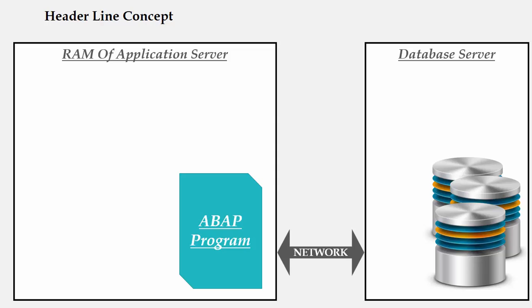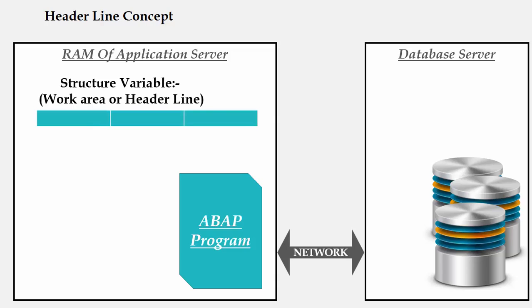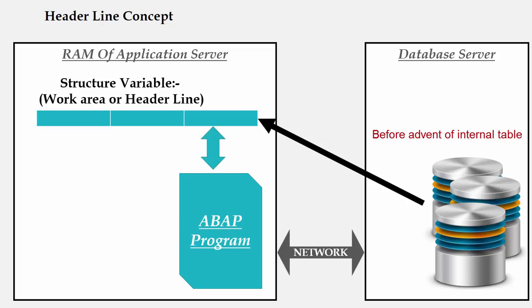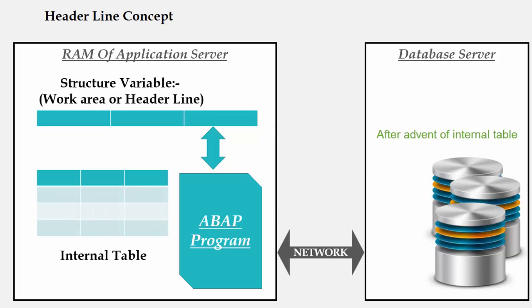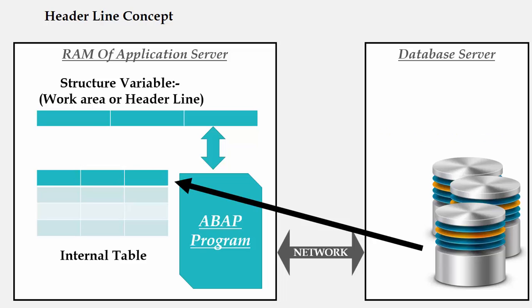As soon as the program is executed it first gets loaded into the RAM of the application server. When an ABAP program starts to execute, the first thing it executes is the declaration — what fields it would require. So a structure variable comes into the picture which holds only one record. Initially this structure used to get data from the database table and would perform certain operations record by record, but this was a very time-consuming process. That's why SAP came up with the concept of an internal table, where in a single shot the table is picked up from the database server into an internal table.